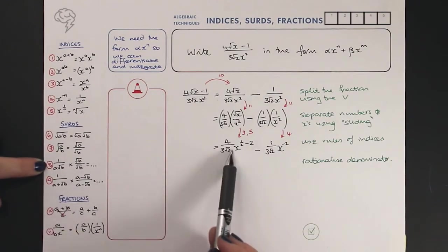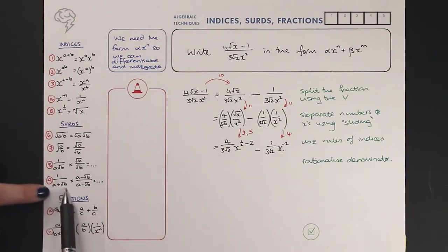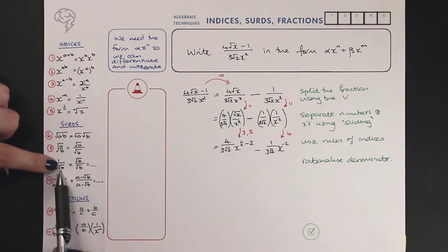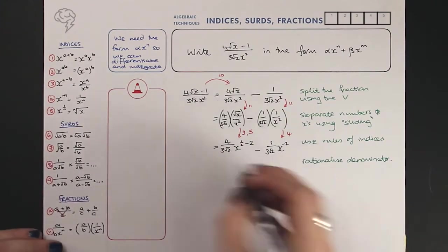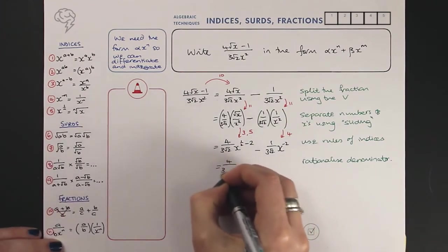The way we're going to rationalize that denominator is using rule eight, because we've got this situation where we've just got a little blob on the bottom, not two things added up. So if we multiply the top and bottom by that surd, we're going to rationalize the denominator, which is what we want.